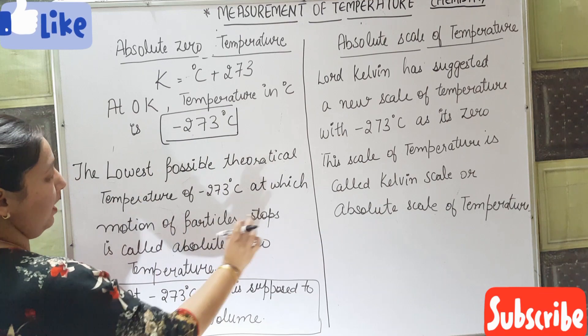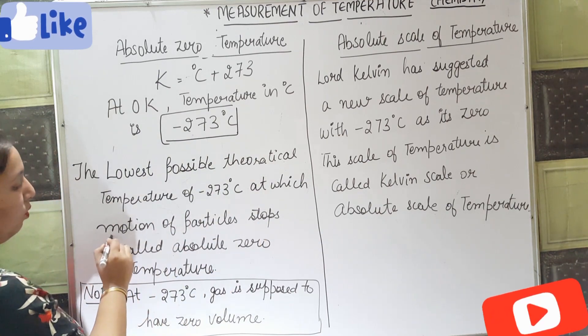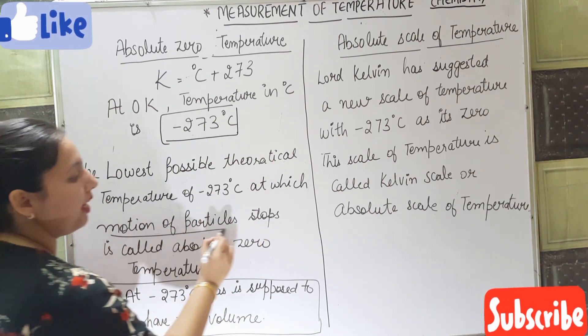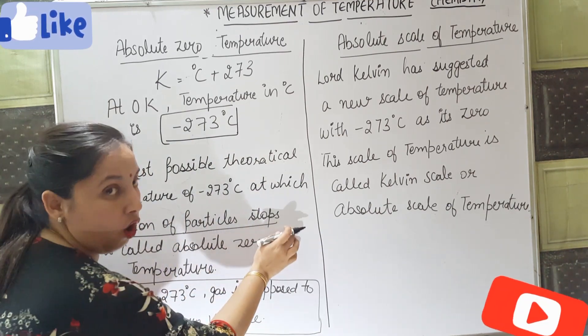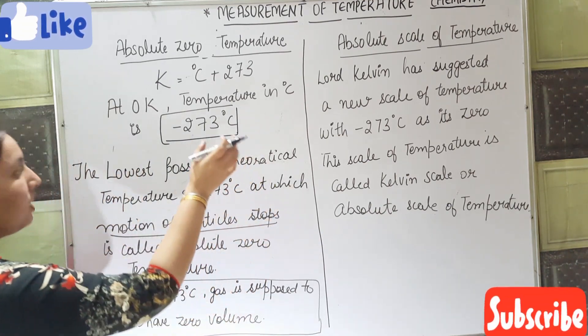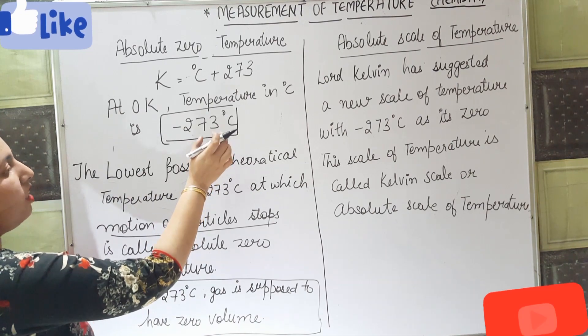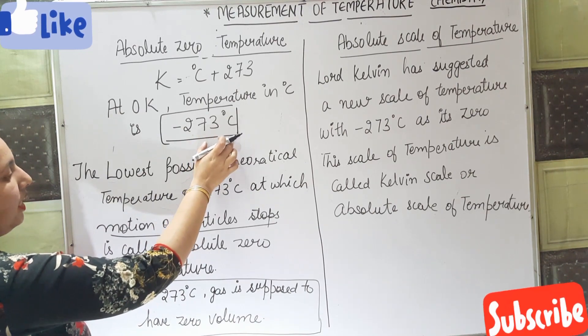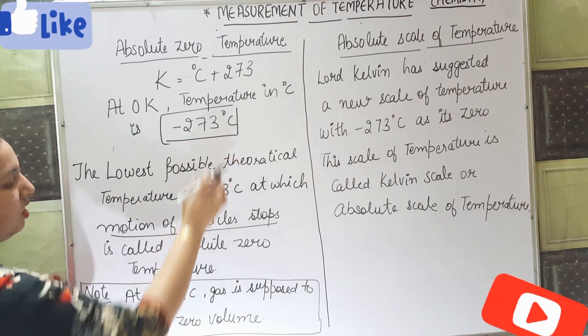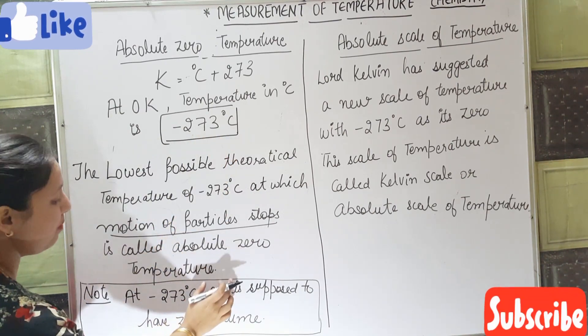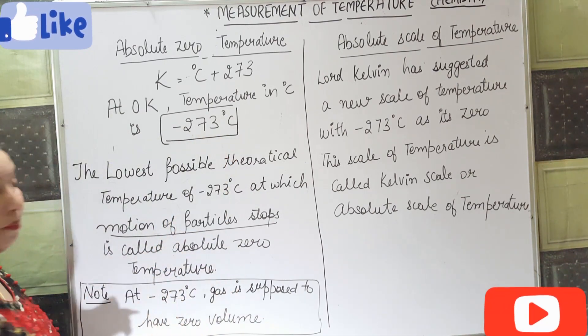At this temperature, the motion of the particle stops. So this lowest possible, lowest theoretical temperature is known as absolute zero temperature.